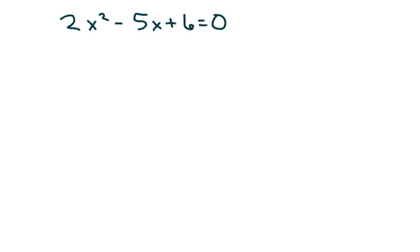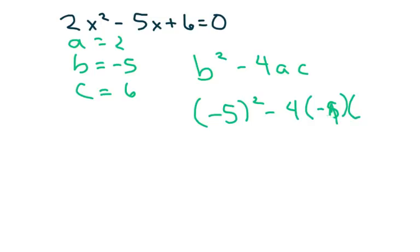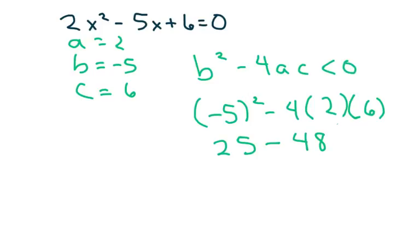Next one: a is 2, b is negative 5, and c is 6. We compute b² minus 4ac: negative 5 squared minus 4 times 2 times 6, which is 25 minus 48. That's clearly negative, so since the discriminant is negative, we have no real solutions.